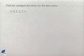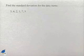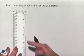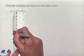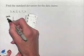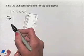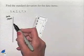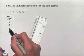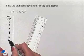We're going to look at a problem where we find the standard deviation for the data items 3, 6, 2, 1, 7, 3. To find the standard deviation we're going to draw a chart to help us, starting with our first column where we list our data items in numerical order — 1, 2, 3, 3, 6, and 7.